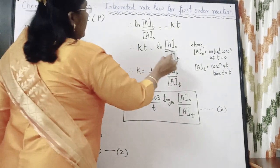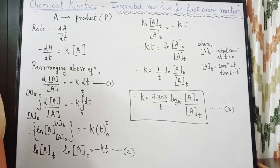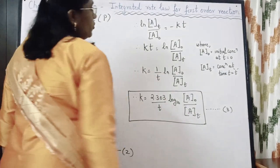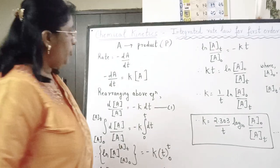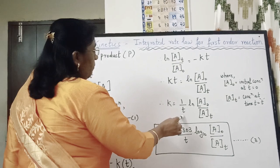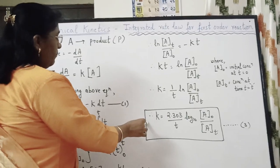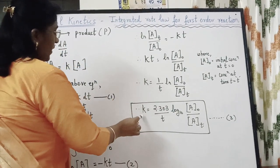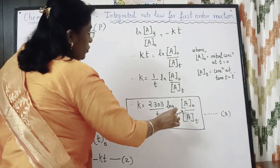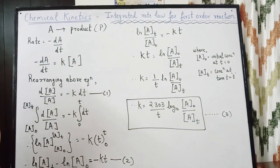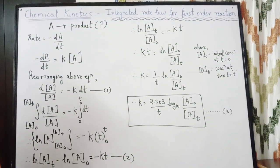Here, [A₀] is the initial concentration of the reactant at time T = 0, and [Aₜ] is the concentration at time T. Therefore, K = (1/T) × ln([A₀]/[Aₜ]). Converting to log base 10, we get K = (2.303/T) × log₁₀([A₀]/[Aₜ]). This equation is called the integrated rate law for first order reaction.